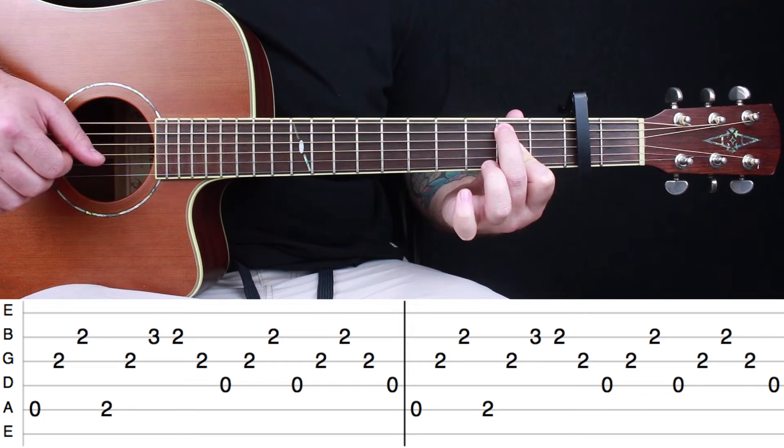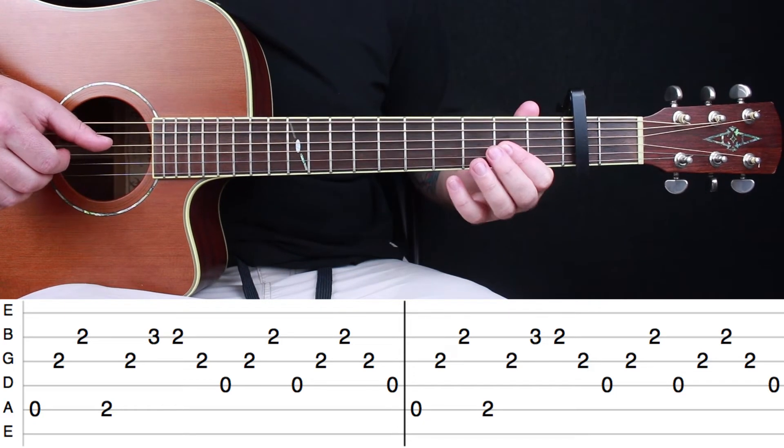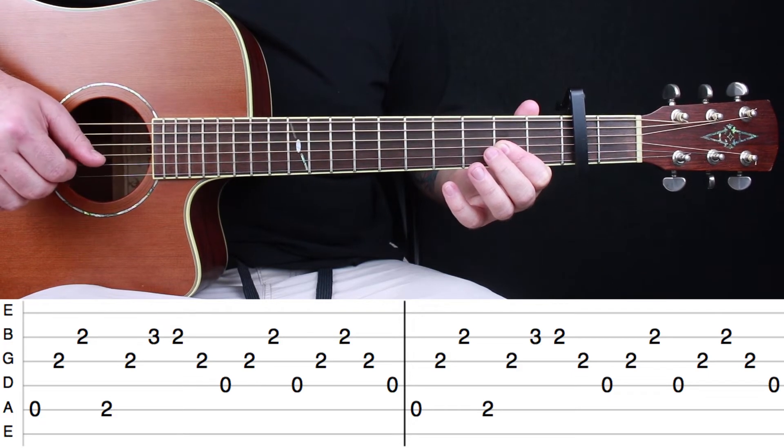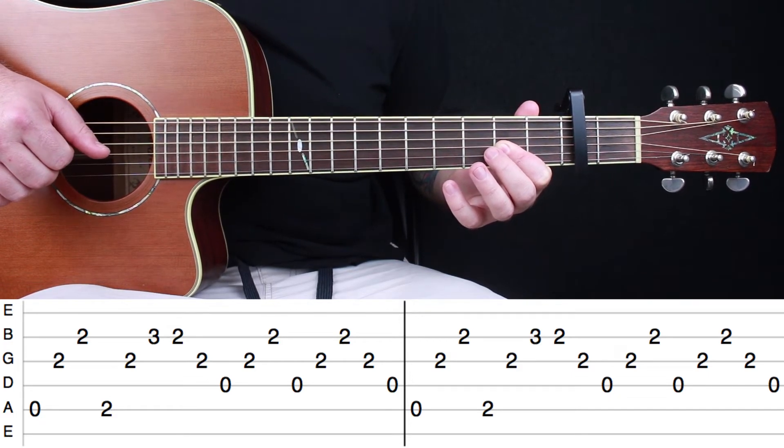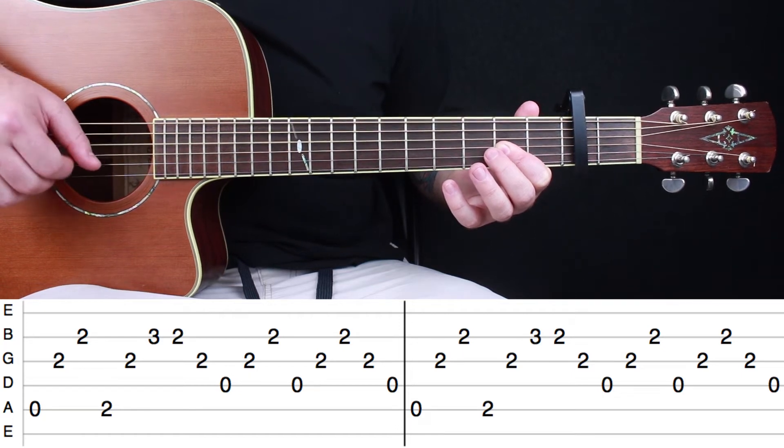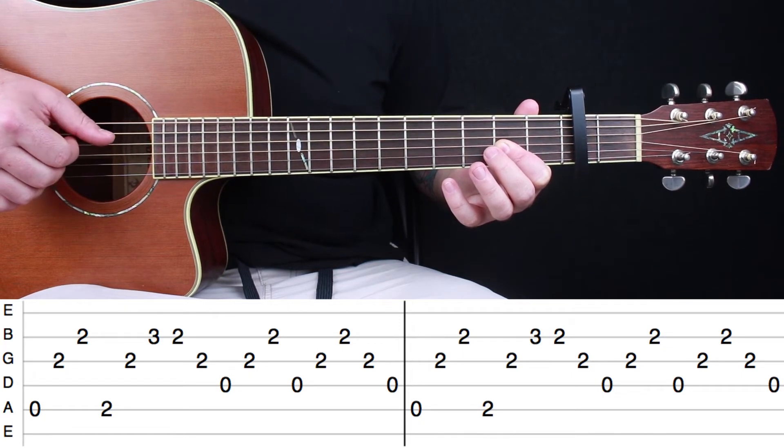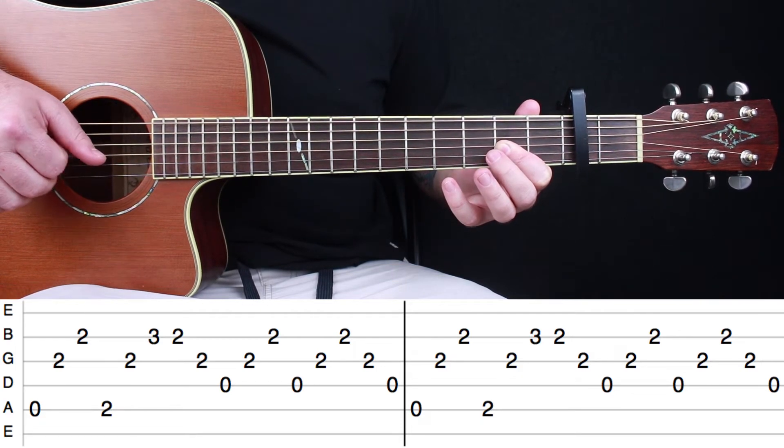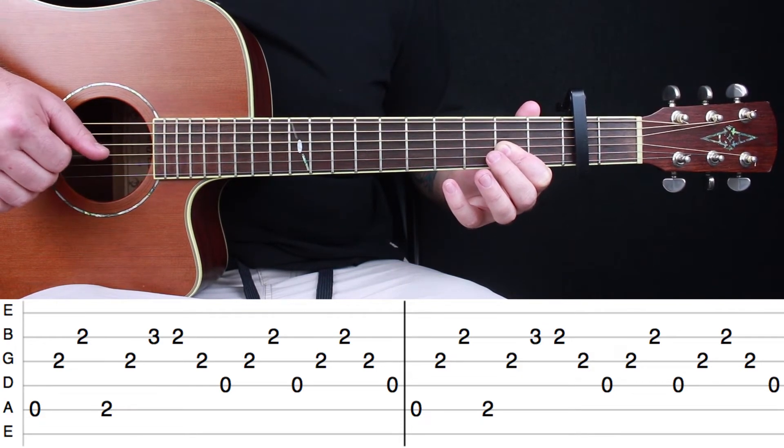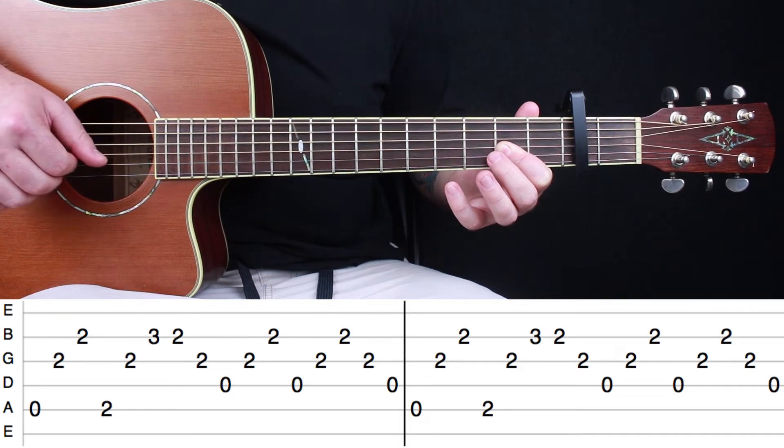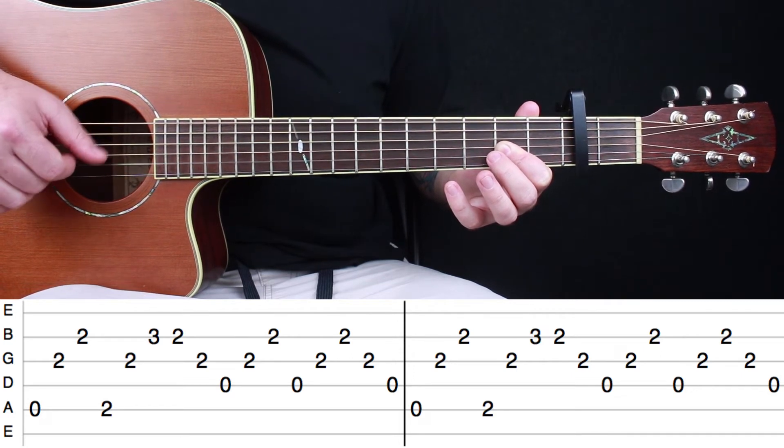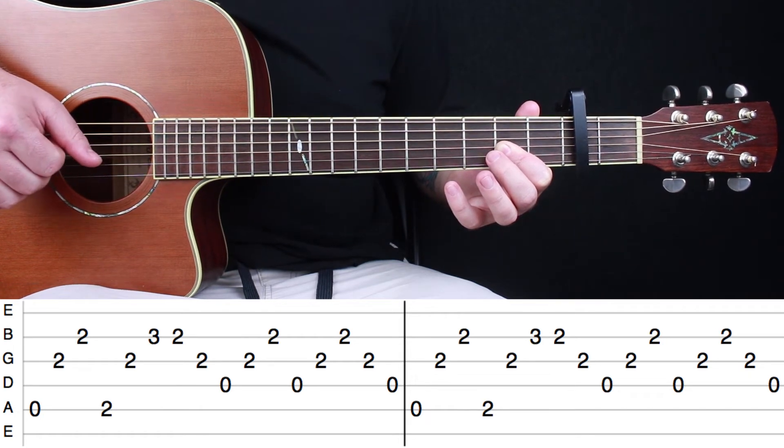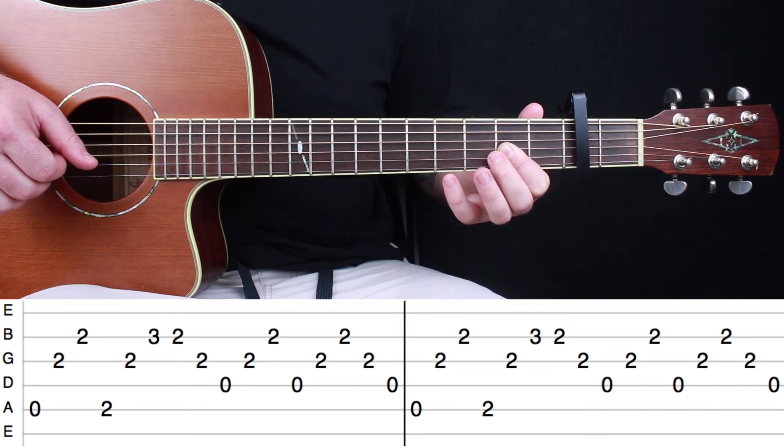Then you're going to pick open D, G, B, D, G, B, G, D. And then it starts all over and repeats.